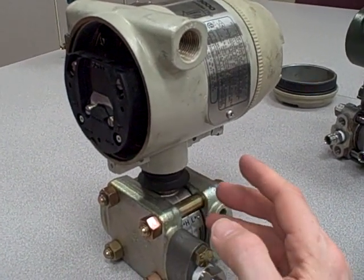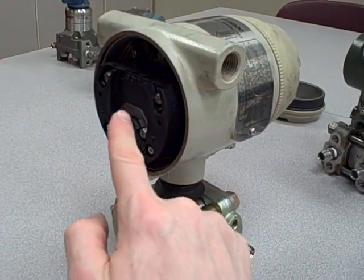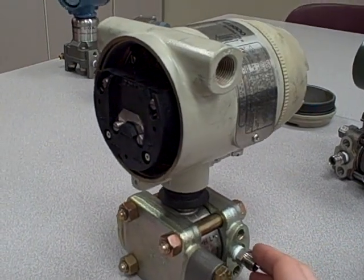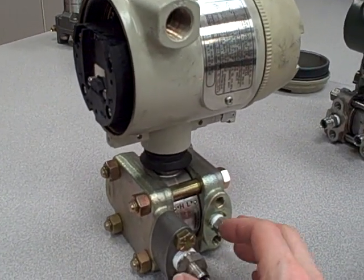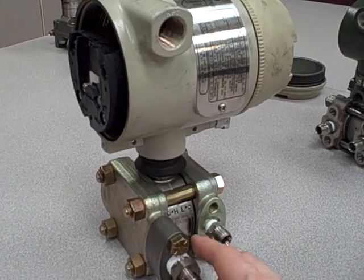The smart label means that it's able to communicate digitally over signals imposed on the 4-20 milliamp DC carrier or DC signal. And in so doing, you can change the range of this transmitter, you can check diagnostic properties and other parameters.